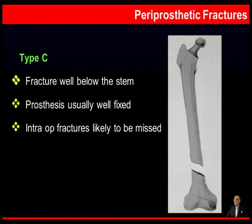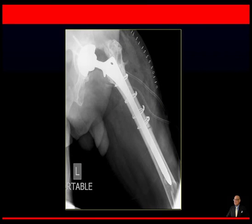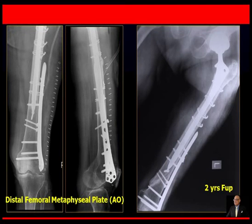Type C periprosthetic fractures occur well below the tip of the stem; the prosthesis is usually well fixed, and sometimes these fractures occur intraoperatively. Treatment for type C fractures is like any other fracture — internal fixation or MIPO techniques. Here is an example of a patient who underwent a revision total hip replacement due to prior infection; a fracture was discovered in the distal femur in the post-operative period and was treated with a distal femoral metaphyseal plate, with a 2-year follow-up showing union.